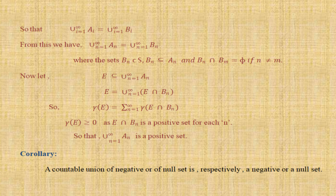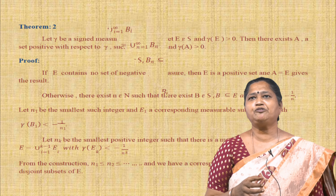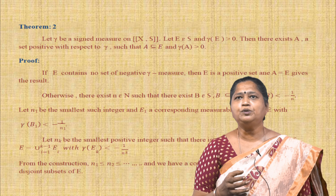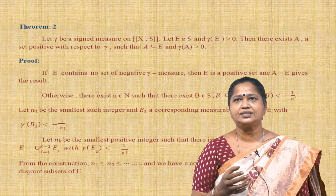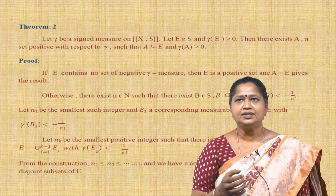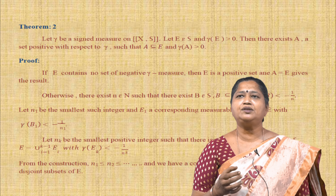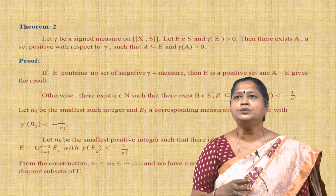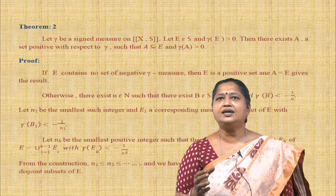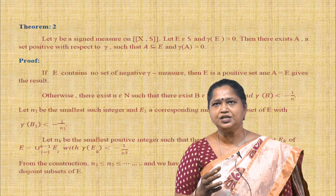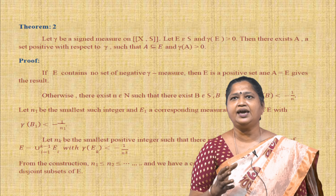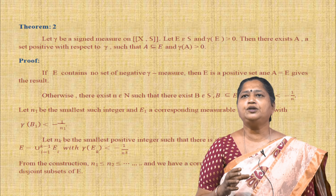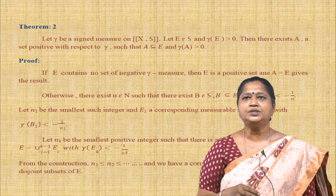Corollary: a countable union of negative or null sets is a negative set or null set. Next theorem: let ν be a signed measure on (X, S). Let E ∈ S and ν(E) > 0. Then there exists a set A positive with respect to ν such that A ⊆ E and ν(A) > 0.